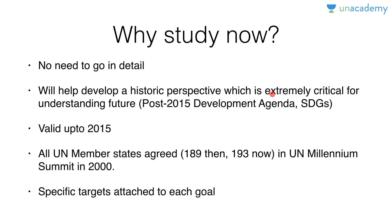For example, whether they achieved the goals or not, whether there was uneven progress, how resource allocation happened — this is the entire historic perspective. Also, how the post-2015 development agenda and the Sustainable Development Goals have been designed considering the shortcomings and achievements of the MDGs. They are valid up to 2015 and the base year is always taken as 1990. All UN member states under the UN Millennium Summit agreed to MDGs — there were 189 member states then, 193 now. There are 21 specific targets attached to the eight goals.